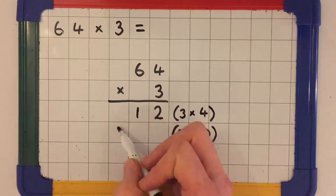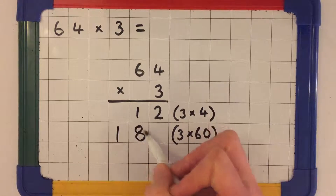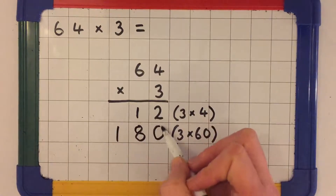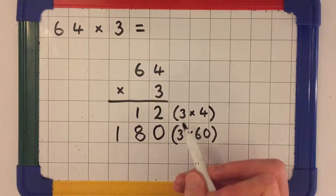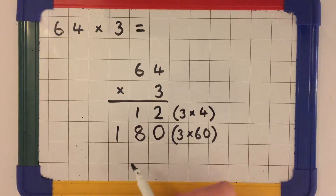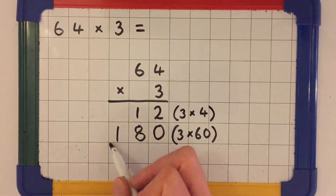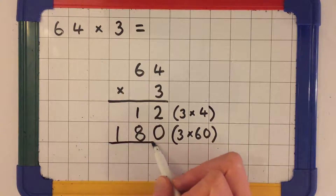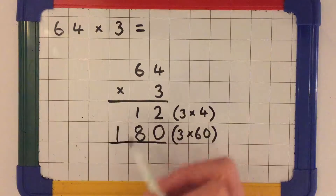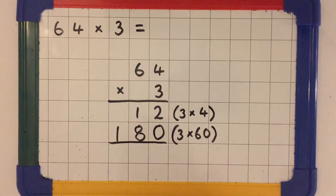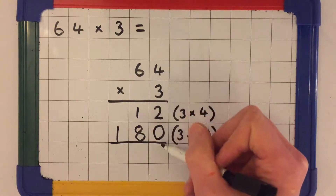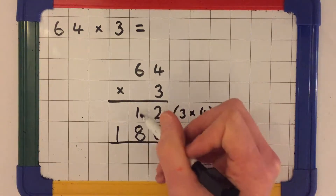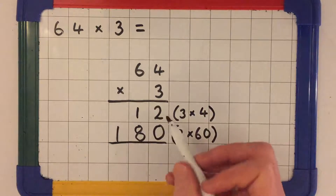So I write 180 in my next row. I've now solved 3 times 4 and 3 times 60. I underline my digits, and now I add down my ones, then my tens, then my hundreds.